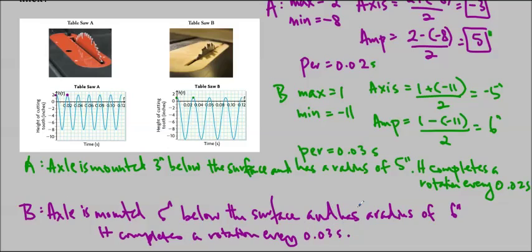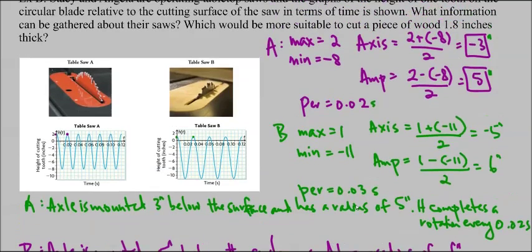Which one would you pick to cut a piece of wood 1.8 inches thick? I personally would pick Stacey's saw A because you can see that if it was on the table, which is at 0, then it goes up to 2, but Angela's would only go up to 1, so it wouldn't cut all the way through the wood. So that is why I would choose Stacey's.